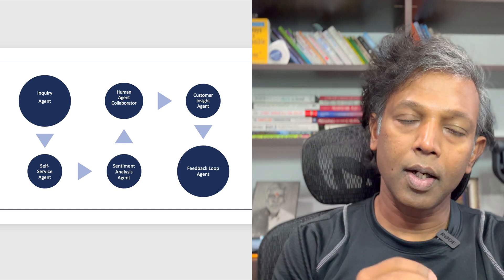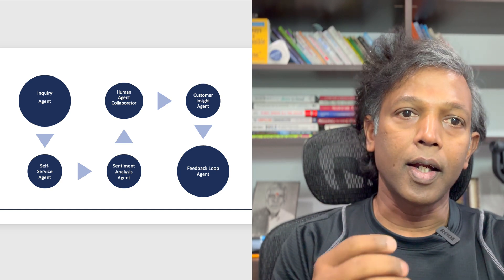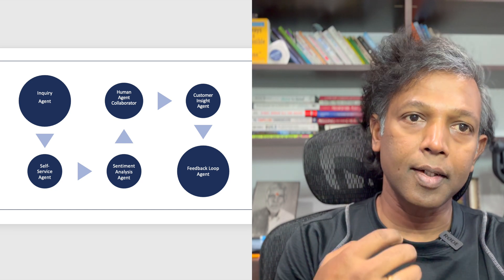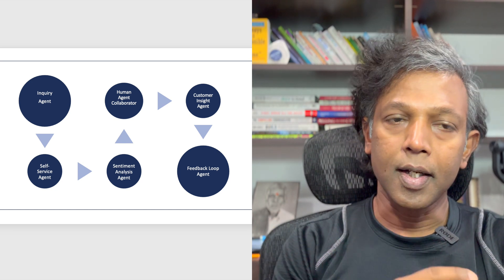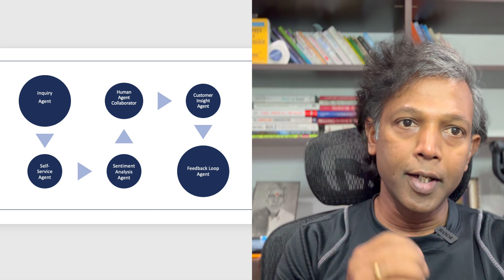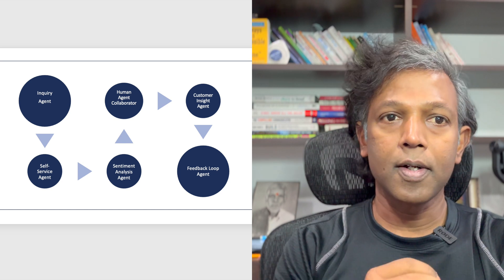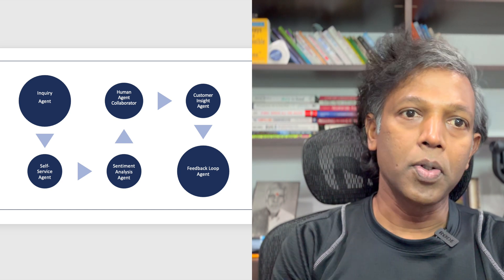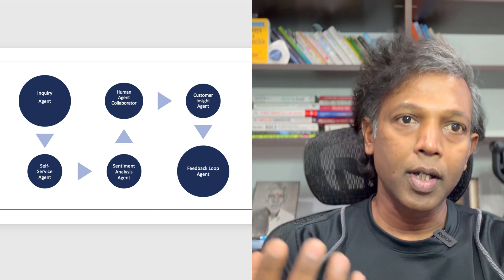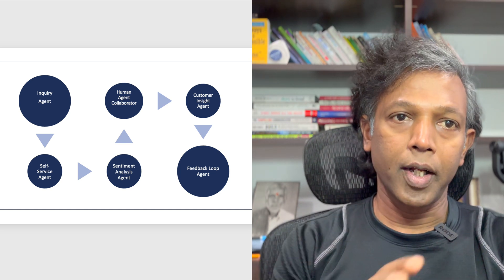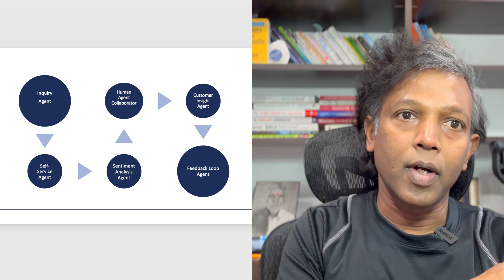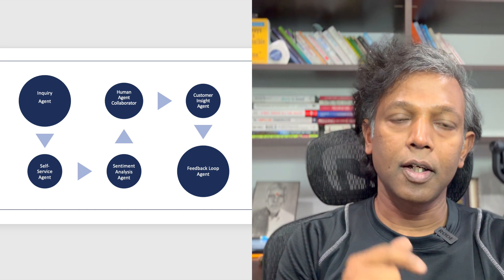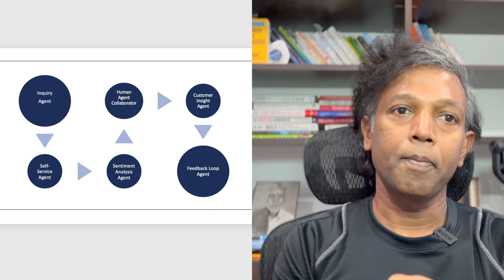You will also build a billing agent to handle all billing-related queries. If a customer comes with an order delay issue, you redirect the query to the order management agent. So for the customer satisfaction organization, you now have different agents: the inquiry agent, the self-service agent, the sentiment analysis agent, the billing agent, the order management agent, and the customer insight agent.